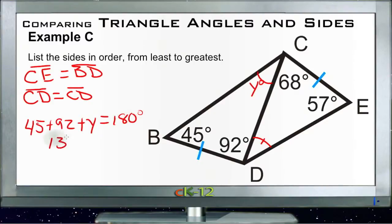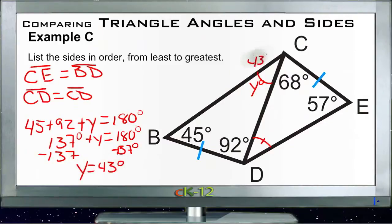Subtract that 137 from both sides and we get 43, so Y equals 43 degrees. So this one over here is 43 degrees.